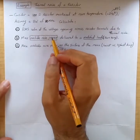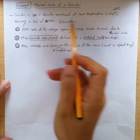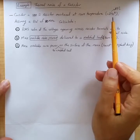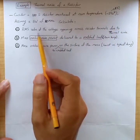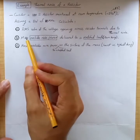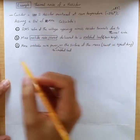Here is an example of thermal noise of a resistor. Consider a 100 ohm resistor maintained at room temperature, 17 degrees Celsius or 290 degrees Kelvin. Assuming a bandwidth of 10 megahertz, calculate the RMS value of the voltage appearing across resistor terminals due to thermal noise.